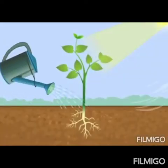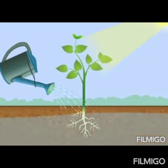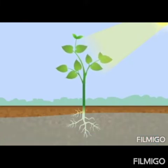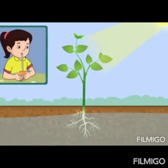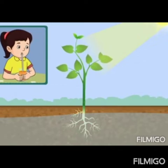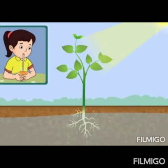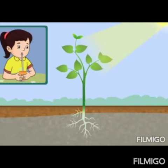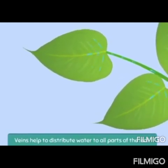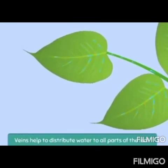The next important thing needed by the plant is water. Plants get water from the soil with the help of roots. Just like the straw that you use to drink juice, the roots and stems of a plant have narrow tubes that help carry water from the roots all the way up to the leaves. The veins in the leaves help to distribute this water to all parts of the leaf.